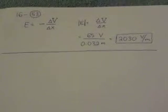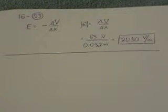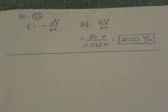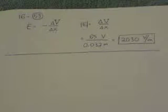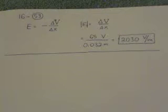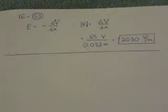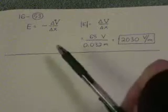The final one of this part one of the video, chapter 16 videos, is number 53. The potential difference between a pair of plates is 65 volts. The plates are 3.2 centimeters apart. What's the magnitude of the electric field? All right, pretty straightforward.